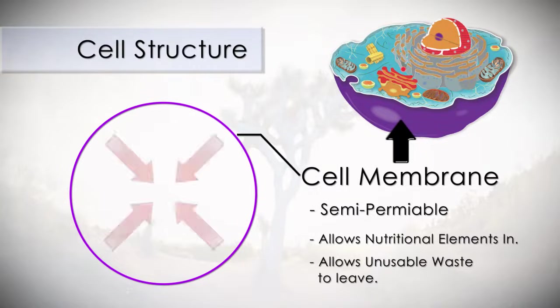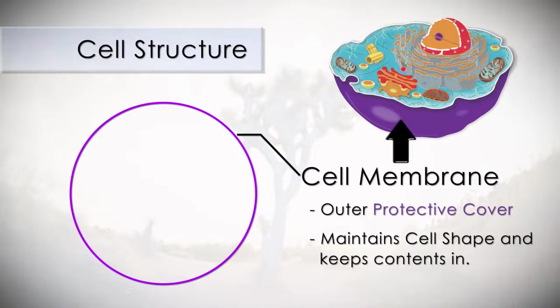It allows unusable waste byproducts to leave the cell and, for the most part, keeps out harmful substances. The membrane maintains the cell shape and keeps the contents, or organelles, from spilling out.